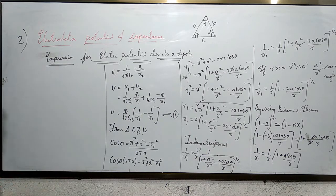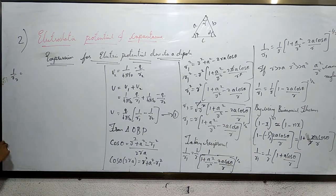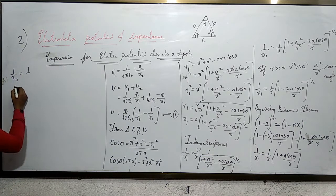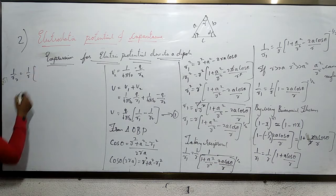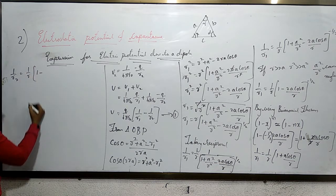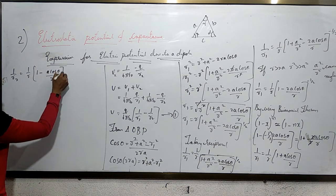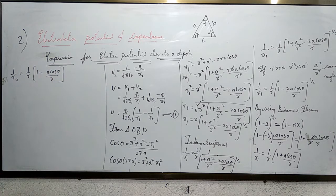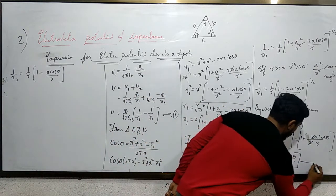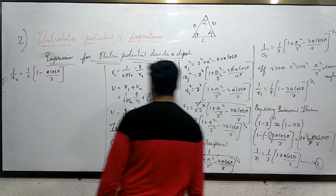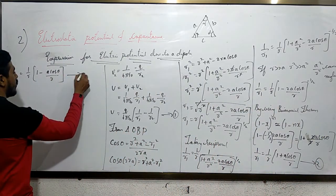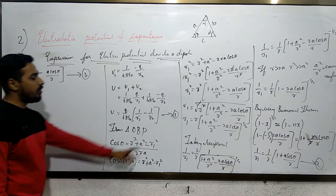Similarly for r₂, the result is the same but with a sign change: 1/r₂ = (1/r)(1 − a cosθ/r). This is Equation 3. Now substituting Equations 2 and 3 into Equation 1.